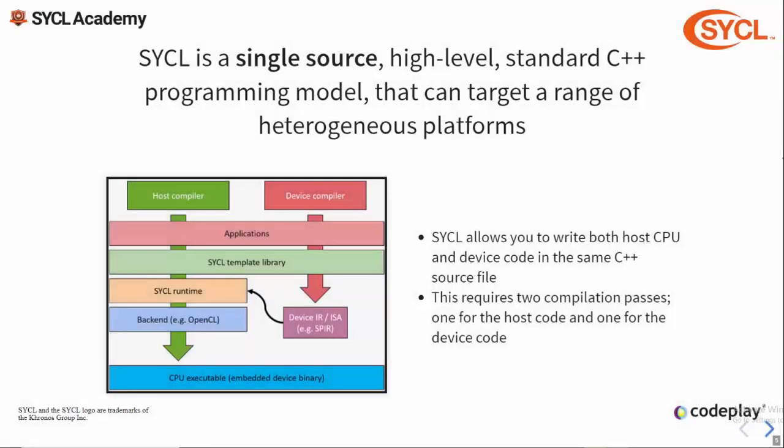So how does this work? Applications in SYCL are written against a single SYCL API, and both the host and device compilers parse the same API but interpret it differently. First, the device compiler compiles the SYCL application and pulls out specific parts to compile SYCL kernel functions, generating some form of binary.